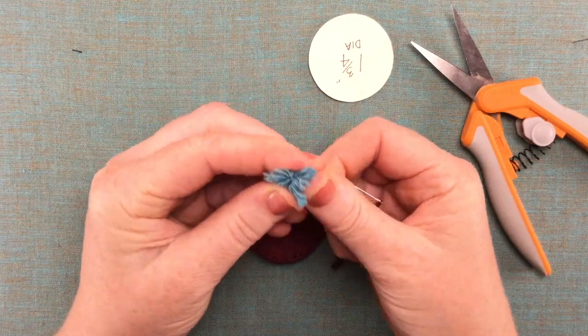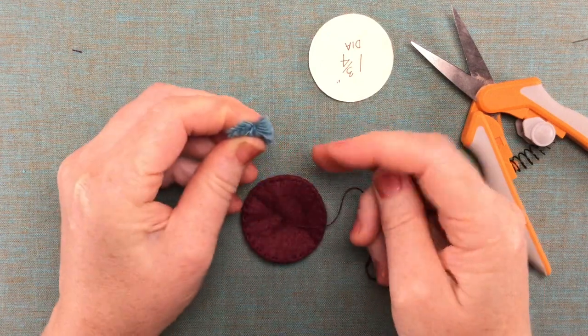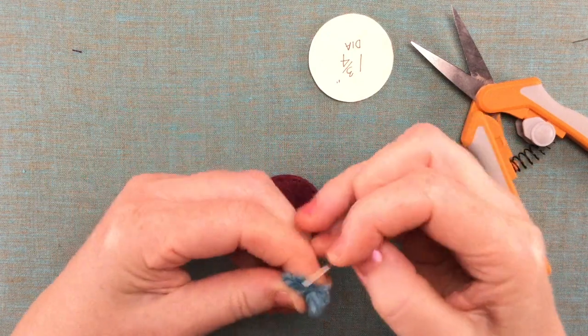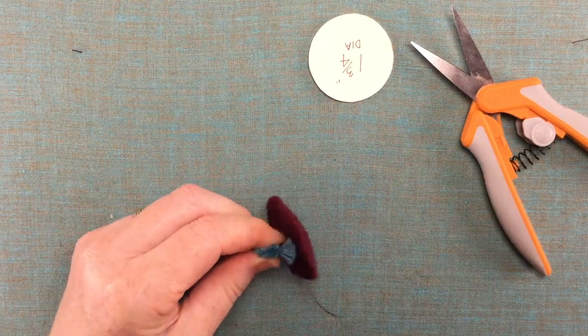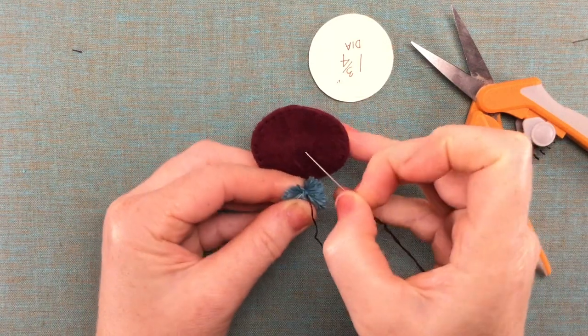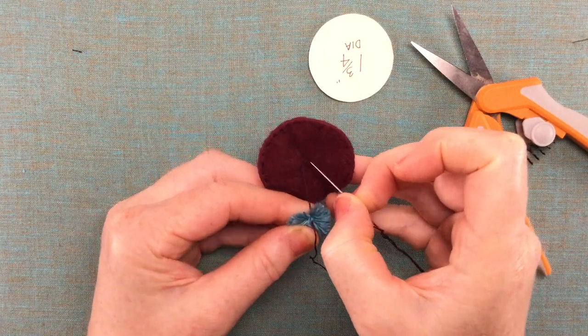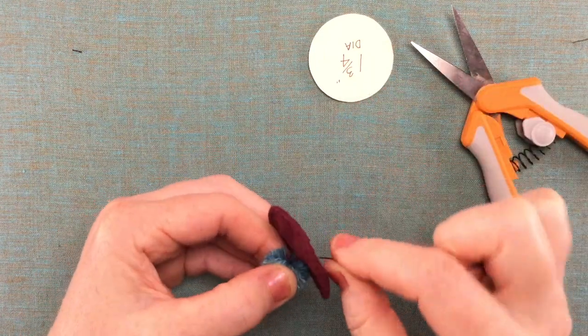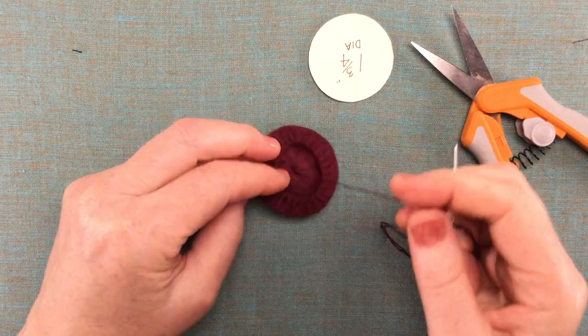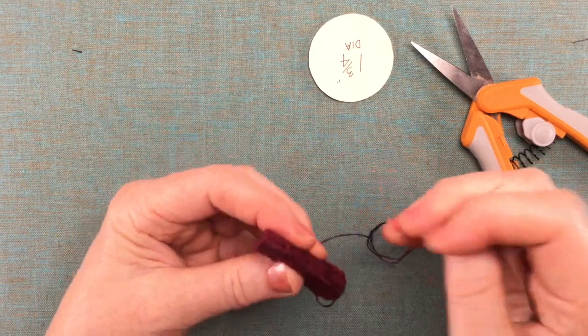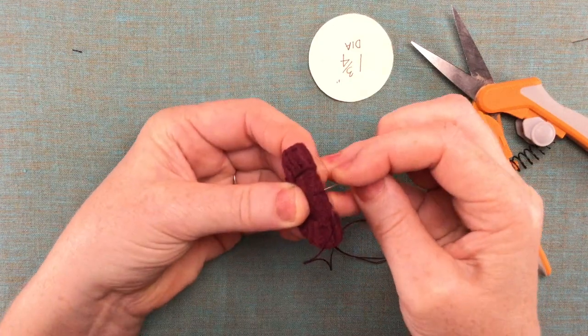And we'll find the seam on our pom-pom. So that's where I want to put my thread through for our connection to the hat. Make sure that I get the seam itself so that it stays on securely.